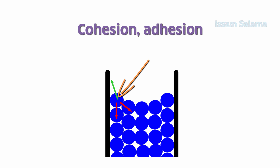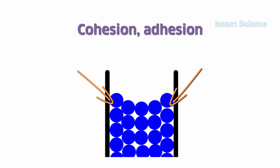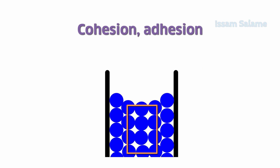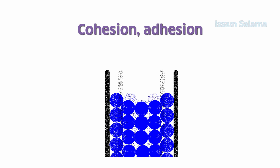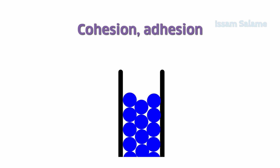Because of the adhesion forces, the wall particles get a little bit higher than the other particles, but they won't go too high because the middle particles pull them down using cohesion forces. But if the tube were narrower, there would be fewer middle particles, so adhesion forces would overcome cohesion forces and the particles in contact with the walls would go higher.